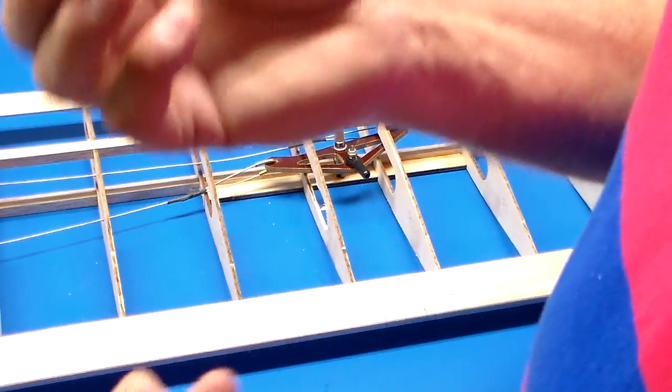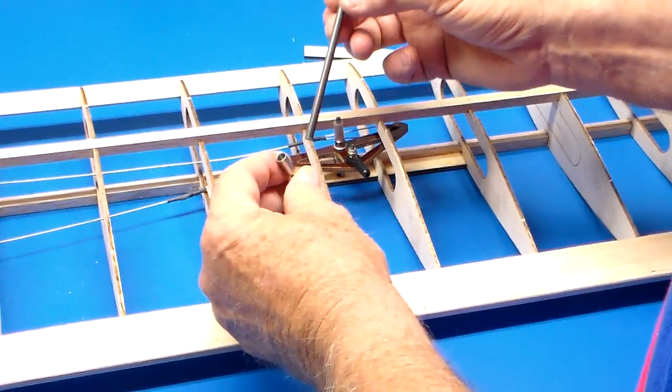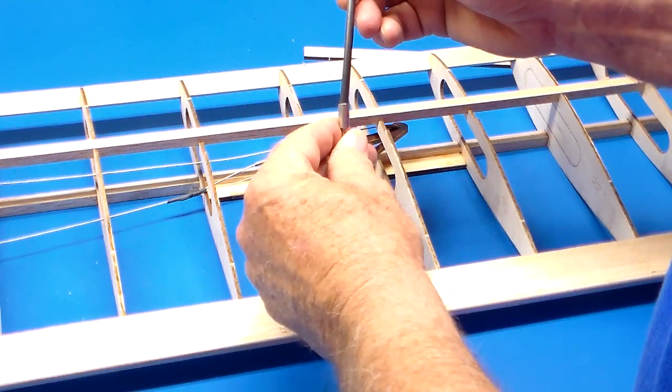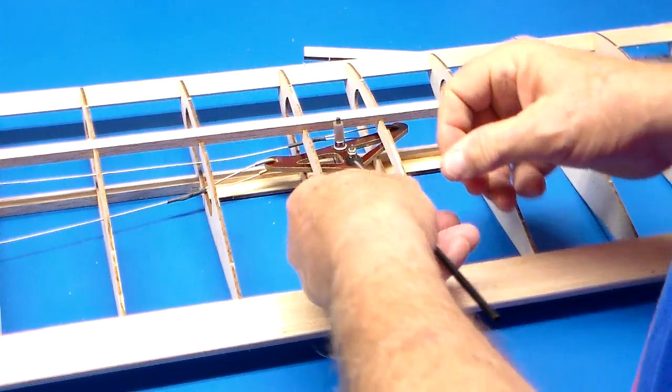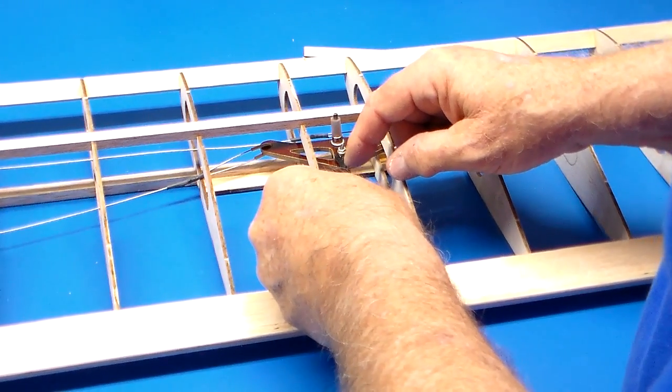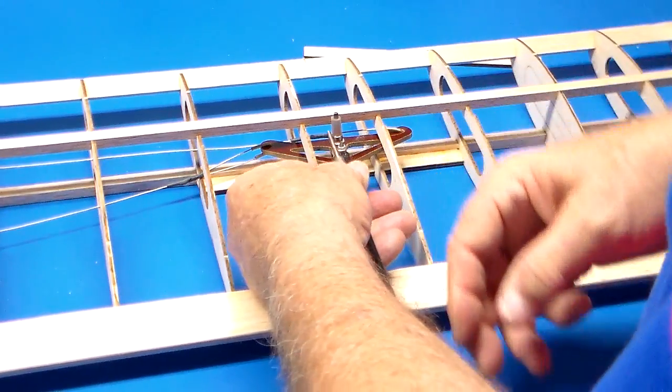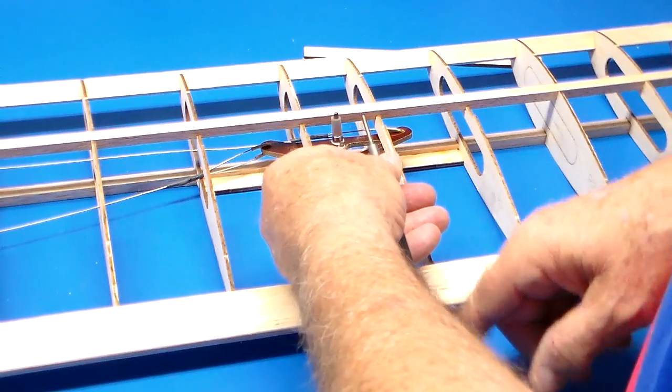Here is the carbon fiber push rod right here. You simply put a little JB Weld in there, put it over the push rod, and then you'll screw this into your ball link. They'll go in a certain distance. The reason this one's short is because this wing has flaps...